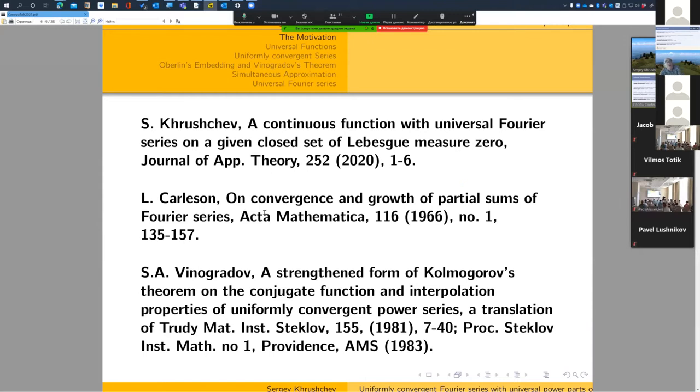Now, I just want to talk about basic papers which lie in the background of this proof. So first goes my paper of 2020, where I constructed just continuous functions with the same property. I could not say that its Fourier series converges uniformly. The second is Carleson's famous paper in Acta Mathematica in 1966. It is one of my favorite theorems in analysis. And it is important to stress that, you know, Fefferman provided another proof, but usually Carleson's proofs just give rise to new development.